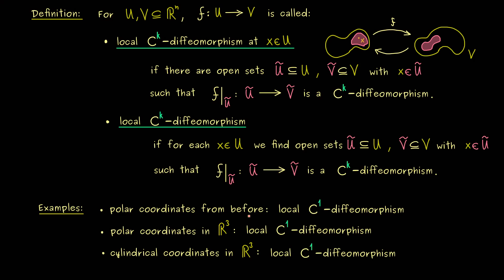Therefore, the next step would be to find a nice criterion to check for a local diffeomorphism. As you might already know, this is given by the determinant of the Jacobian matrix, as we have done it before. So what we get is an inverse function theorem, and we will discuss that in the next video. I really hope we meet there again — have a nice day, bye bye.